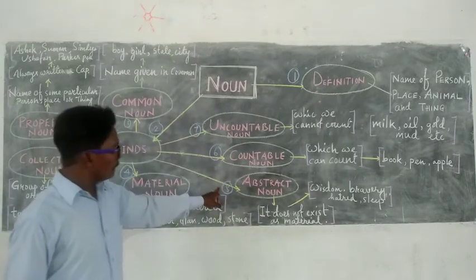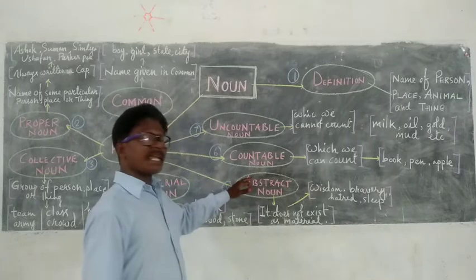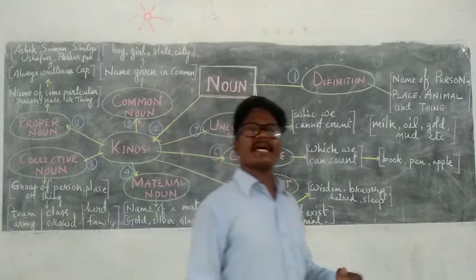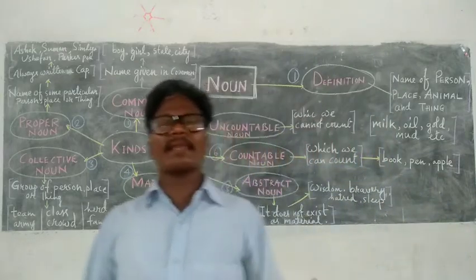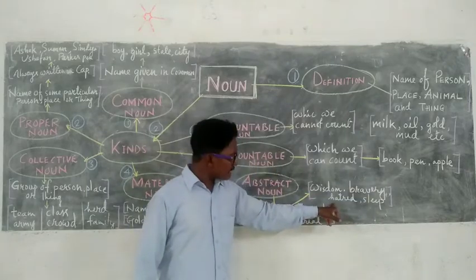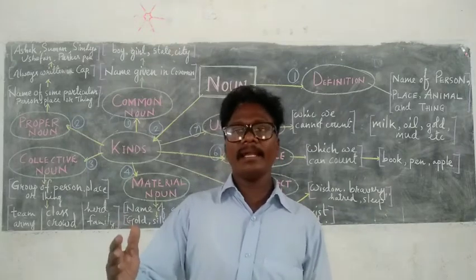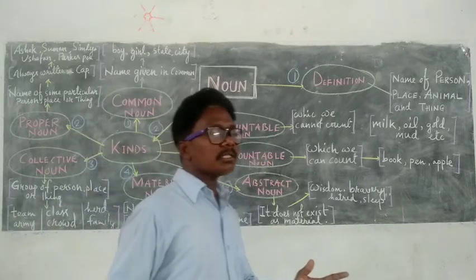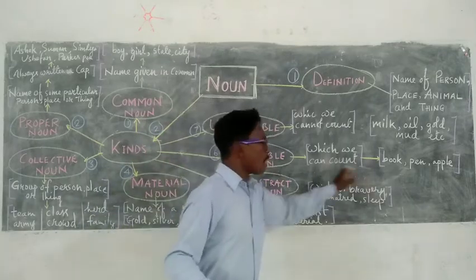Fifth: Abstract Noun. What is an abstract noun? An abstract noun does not exist as a material. We cannot see it, touch it or smell it. Examples: Life, Wisdom, Gravity, Hatred, Love, Sleep. Suppose I said 'show me wisdom' — you cannot, because you have not seen it and cannot see it. So these are abstract nouns.